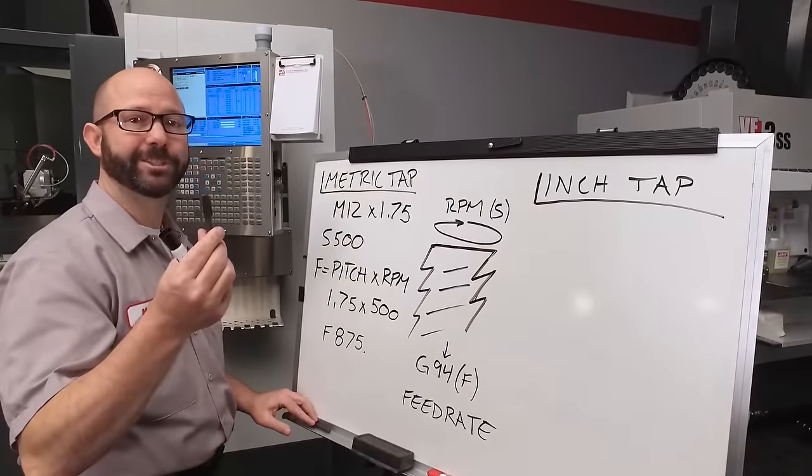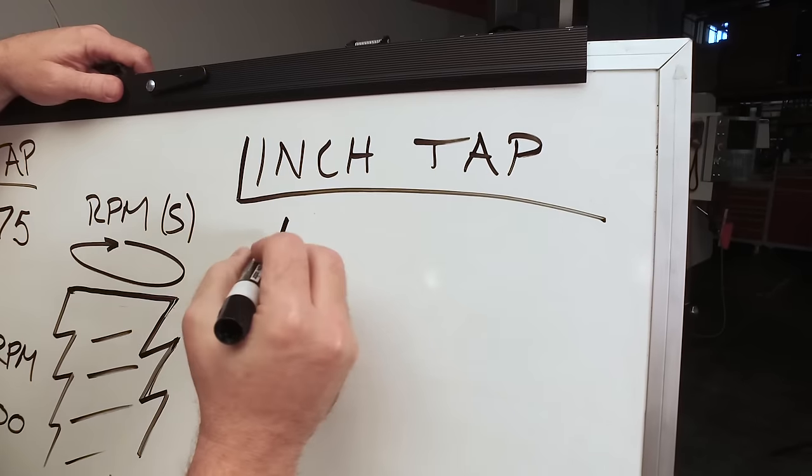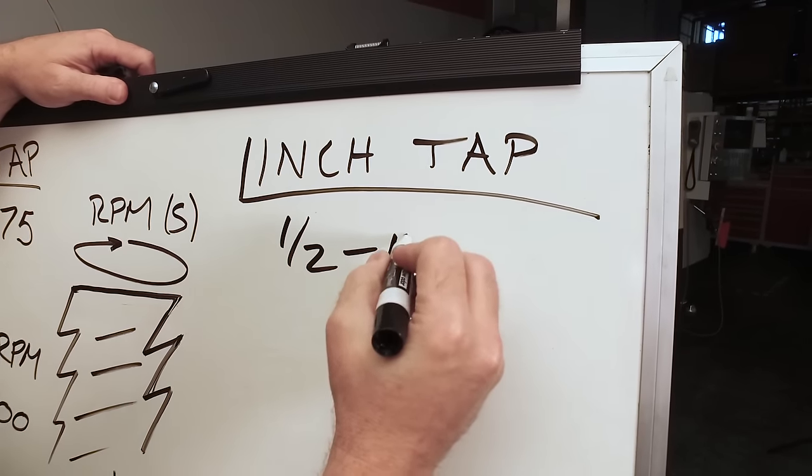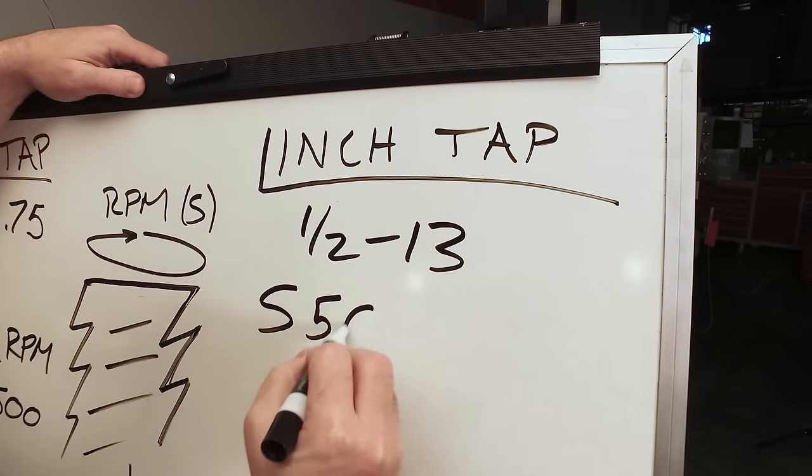Now we're going to program our inch tap. For this example, we're going to use a 1.5-13. Now for this tap, we're going to use that same 500 RPM value.